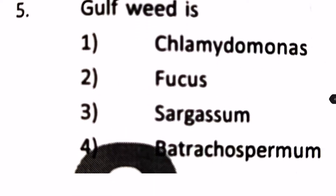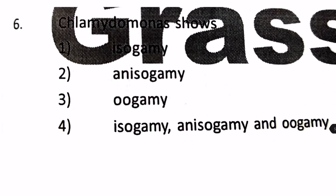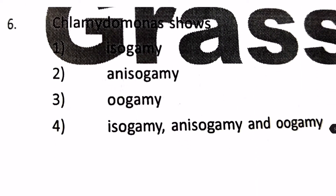Gulfweed is which organism? Options are Chlamydomonas, Fucus, Sargassum, and Batrachospermum. This is a fact-based question from Classical Botany. The answer is actually Sargassum, which is a marine brown algae and is also called Gulfweed.